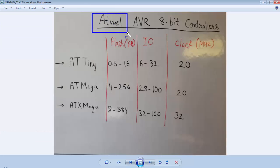ATMEL is one of the microcontroller manufacturers for 8-bit and 32-bit microcontrollers. In the category of 8-bit microcontrollers, the AVR series is very popular and there are mainly three categories under the AVR microcontrollers: ATTINY, ATMEGA, and ATXMEGA.